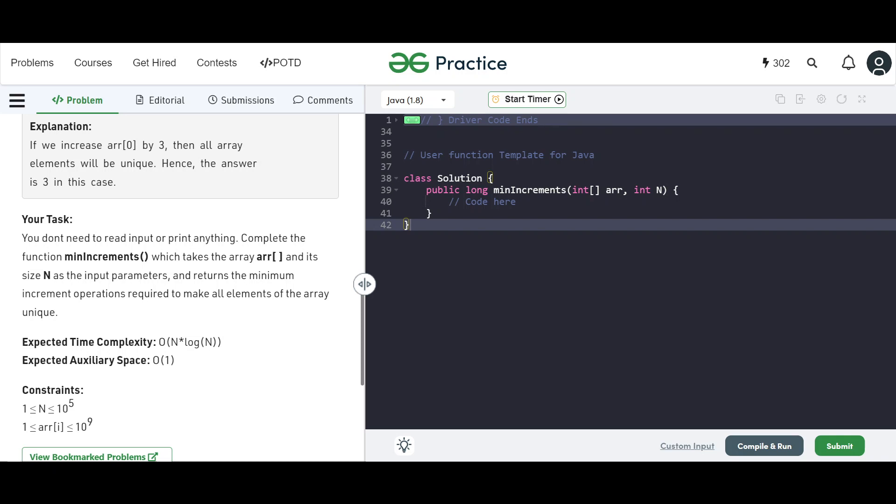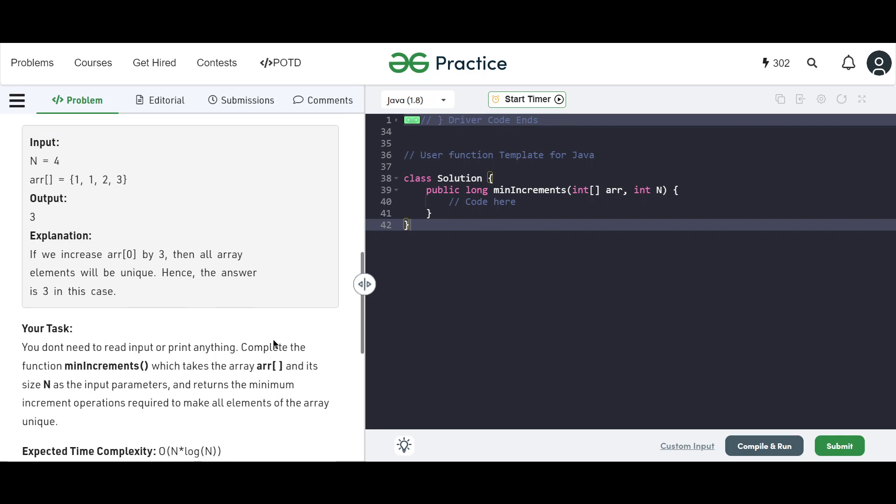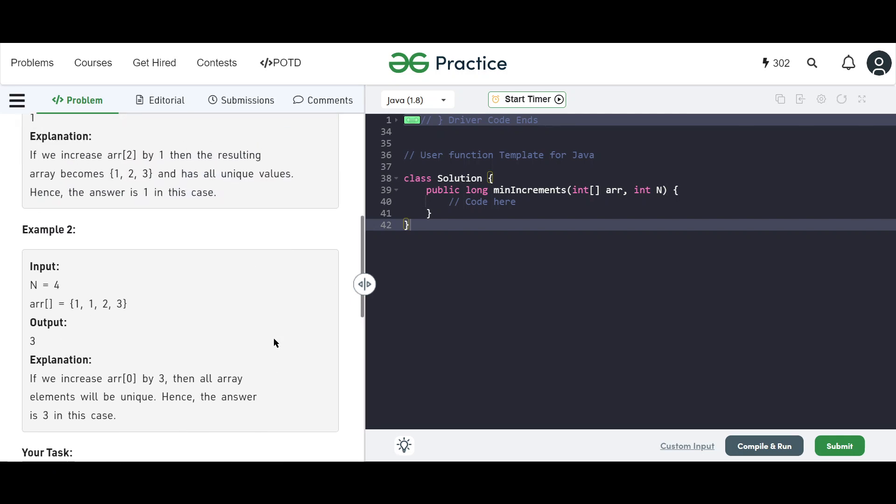So how can we do this? We can't take any extra space, that's clear. And it says O(n log n). Could we sort it then? Maybe we sort it. Okay, so let's say we sort it. After sorting, what can we do?